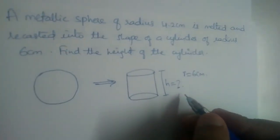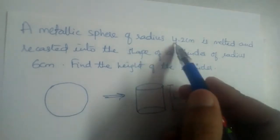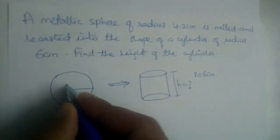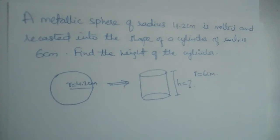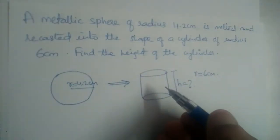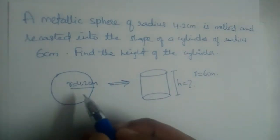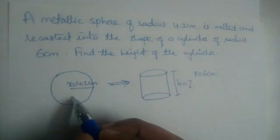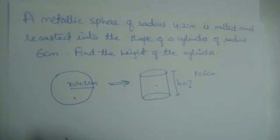We need to find the height of the cylinder. The radius of the sphere is 4.2 cm. Now, when we are melting a solid and forming another solid, the volume remains the same. So the volume of the sphere is equal to the volume of the cylinder.